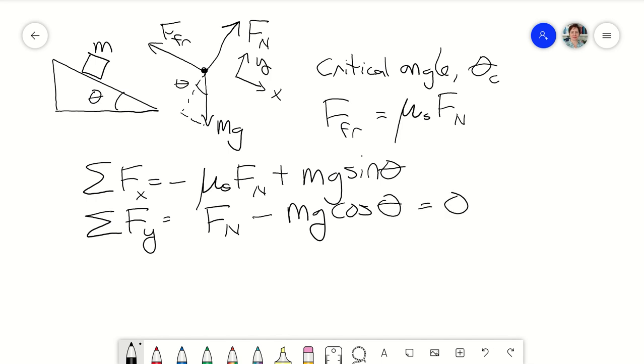Now right at slipping, the acceleration is zero. This is a bit tricky because after it slips, it turns out that kinetic friction, which then takes over, is usually less than the maximum static friction. So it will actually accelerate after this point. But we can find just that slipping point by setting this equal to zero.